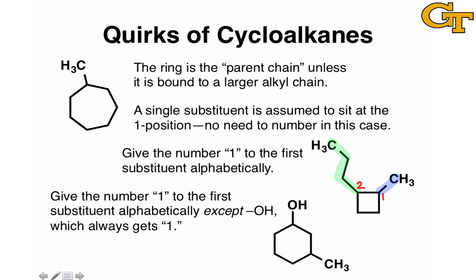The one exception to this rule of giving number one to the first substituent alphabetically is the hydroxyl group, which always gets the number one. This is similar to the idea we saw with alcohols, where the hydroxyl group was so important that the parent chain had to include it. In cycloalkanols, or cyclic alcohols, we always give the number one to the hydroxyl group and number the other carbons so that the remaining substituents get the smallest numbers possible.